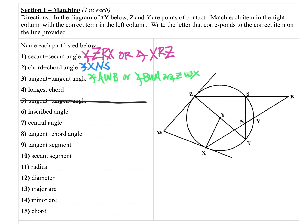The longest chord — remember a chord has to connect two points on a circle — is always going to be a diameter. So ZT would be my longest chord here. When I name that, I write ZT with a line segment symbol over top.